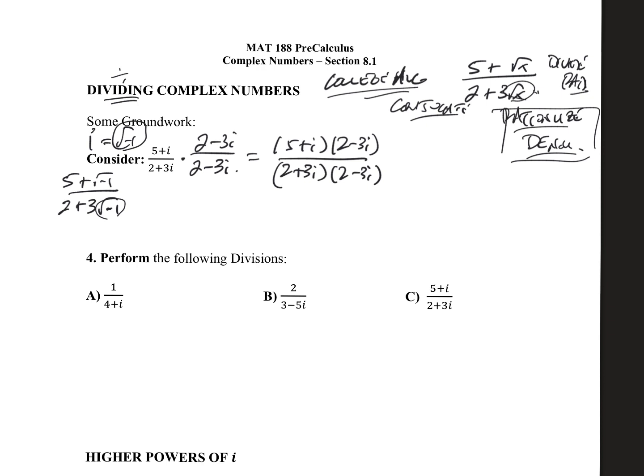So upstairs, we foil out. So 5 times 2 gives us a 10. The outer gives us a negative 15i. The inner gives us a positive 2i. And then we get a negative 3i squared.